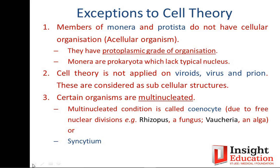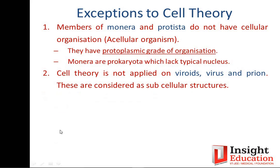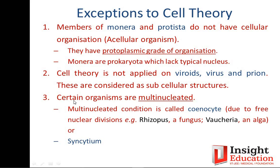Two multi-nucleated conditions are: first, coenocyte — where karyokinesis happens but cytokinesis fails, seen in Rhizopus and Vaucheria; second, syncytium — where complete cell division occurs but cells subsequently fuse due to coordinated function, as in cardiac and skeletal muscle cells. All of these are considered exceptions to the cell theory.